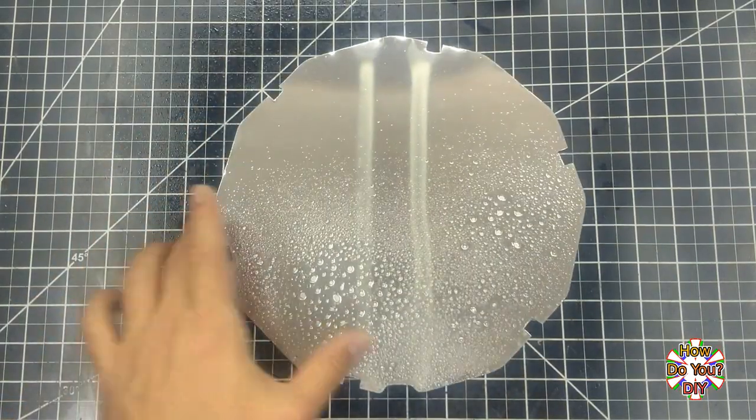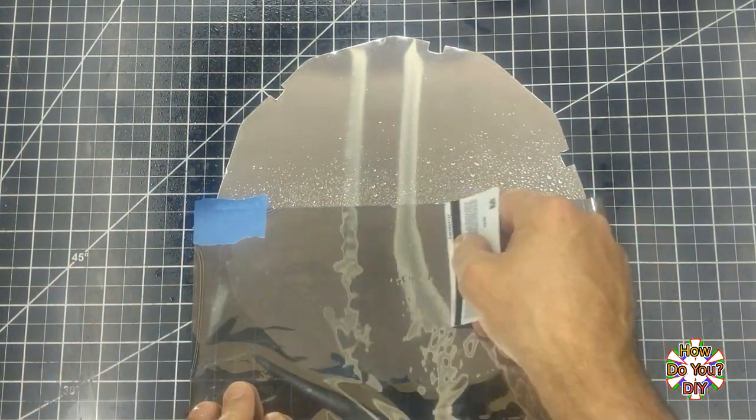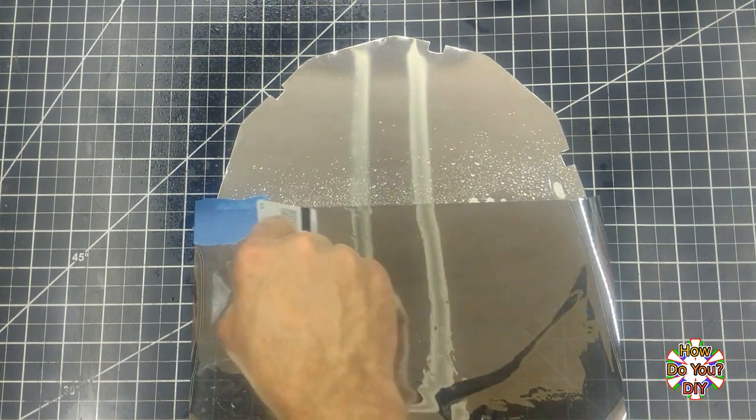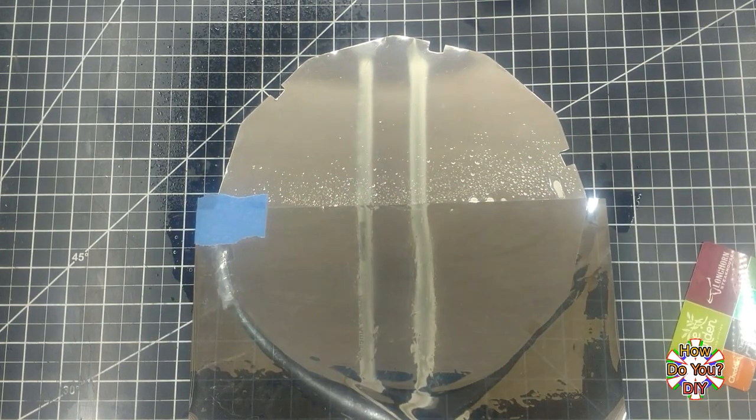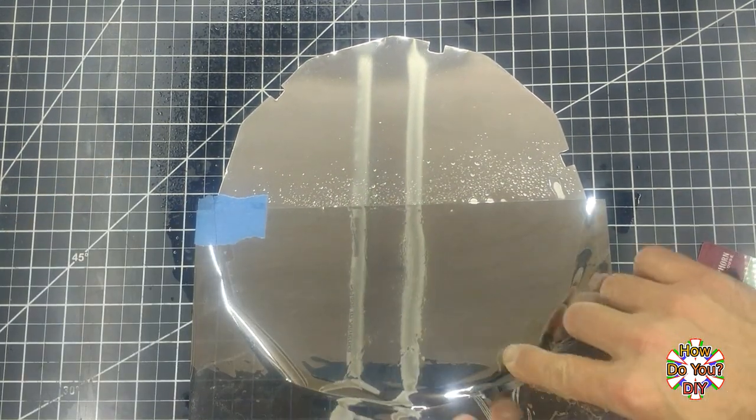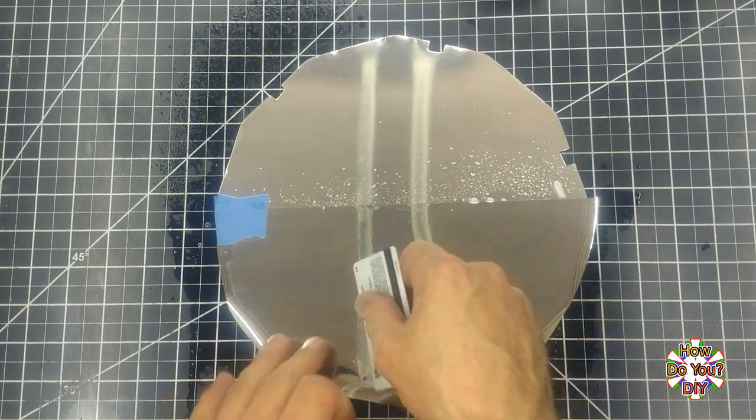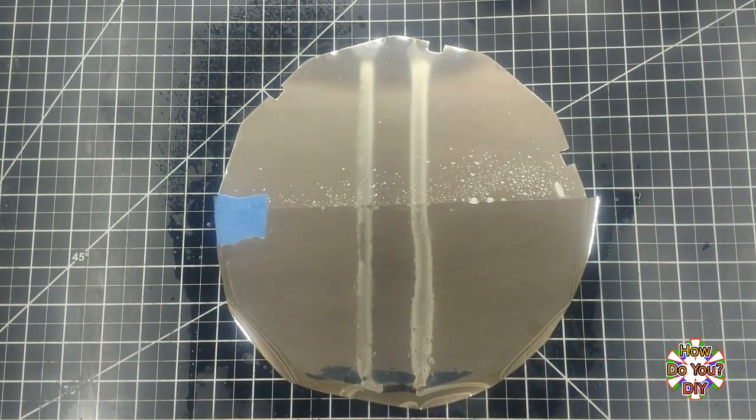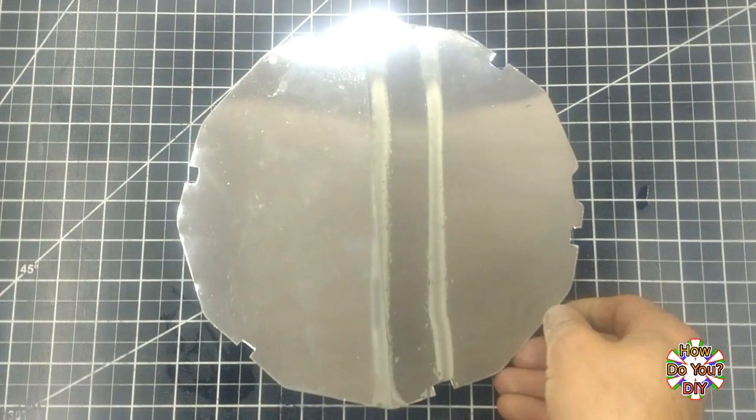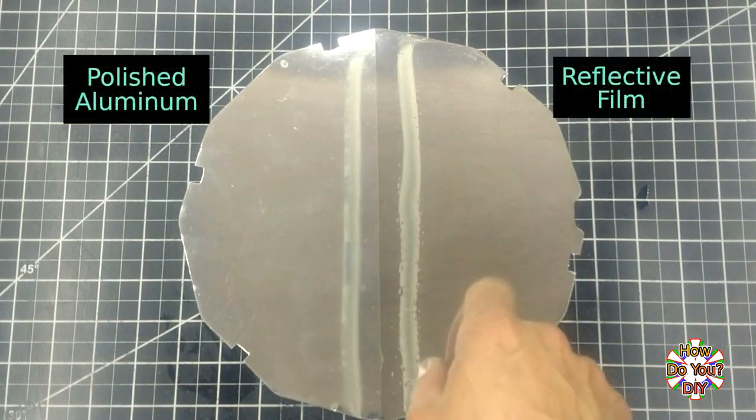Just out of curiosity, I want to test something out. I'm applying some of my reflective film to half of this surface to see how the results compare to the polished metal surface. The reflective film will be on the top half of the clock.